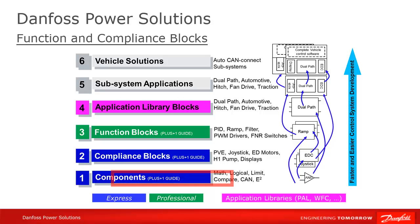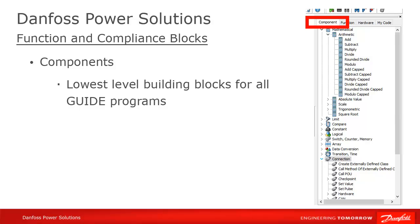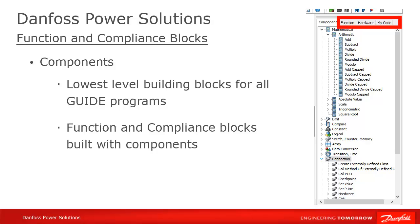The first step on the ladder is the component level. When you first start programming in Guide, you'll probably be using these lowest-level components. These are elements which accomplish simple functions like arithmetic calculations — add, subtract, multiply — constants, logical comparisons like AND, OR, exclusive OR, switches (if this condition is true, use this value; if not, use this other value), but also slightly more complicated functions like sending CAN messages, various counters, or timing elements like delays or oscillators. These components are the fundamental building blocks of all Guide applications. They are all found on the Components tab in your Guide environment. All higher-level blocks, like function and compliance blocks, are built using these components.